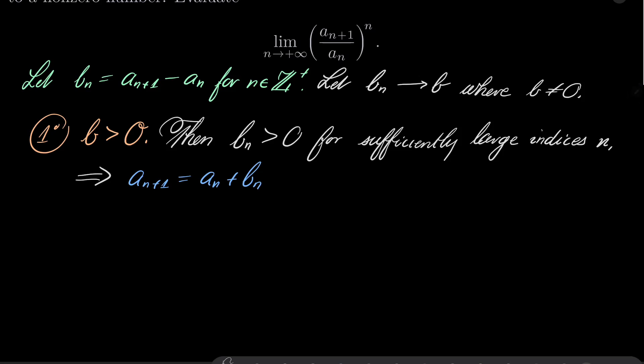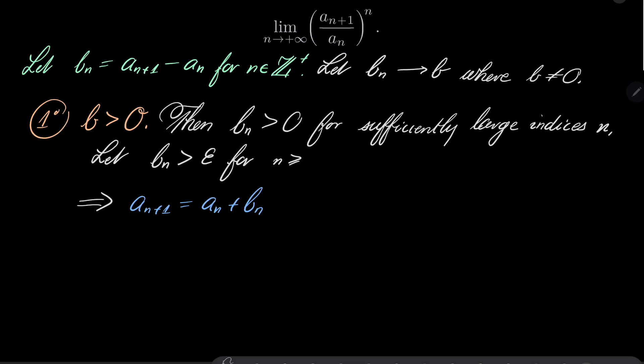for example, let's say the following, that let b_n be greater than epsilon for n greater than or equal n_0, where epsilon is some positive number. Notice that then, a_{n+1} equals a_n plus b_n, which is strictly greater than a_n plus epsilon, for n greater than or equal n_0, and from there we can see that our sequence a_n is increasing from some index.